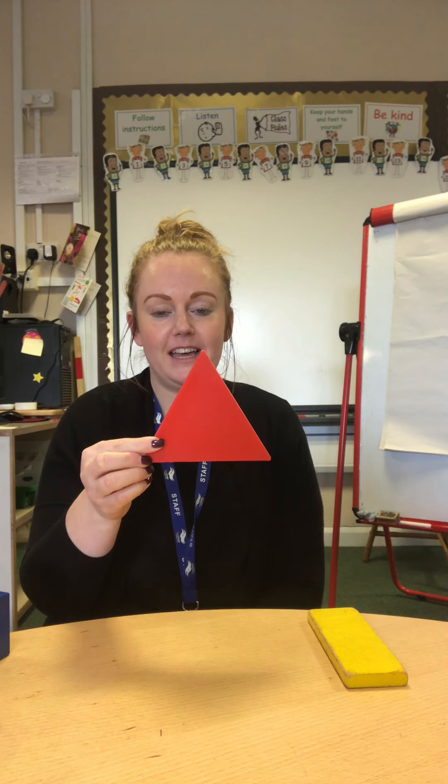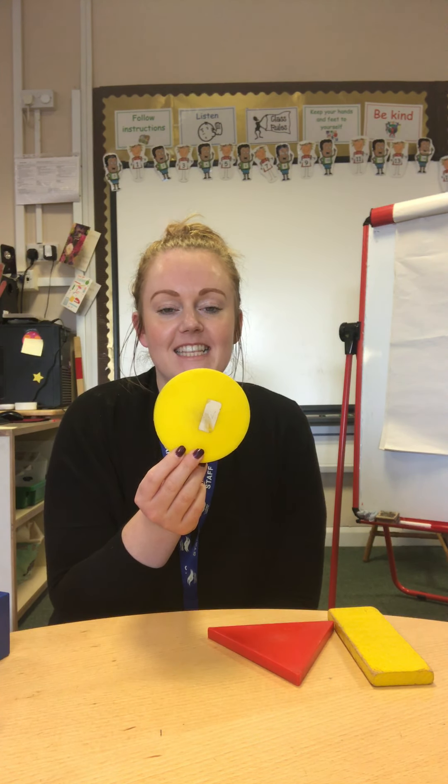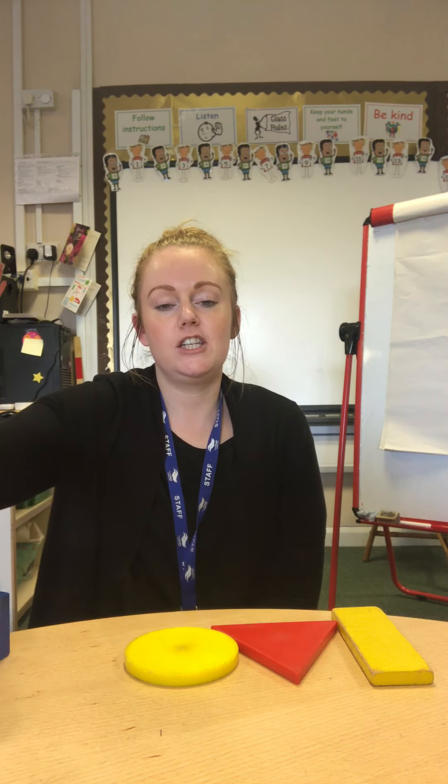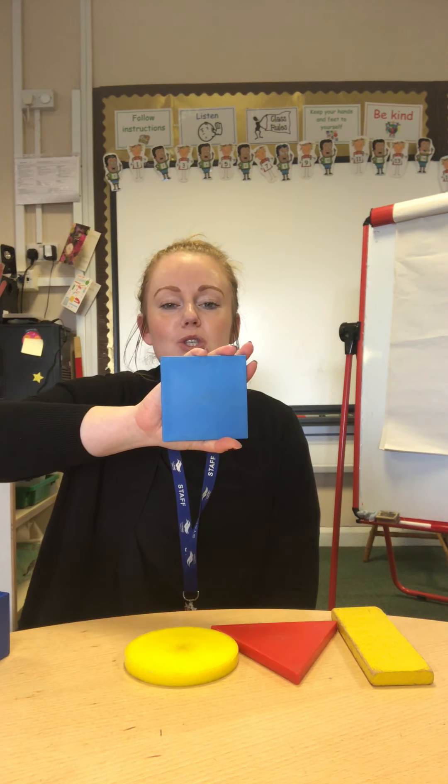Let's see if you know the name of this shape. Well done, it's a rectangle. Let's see if you know the name of this shape. It's a triangle, did you get that one? Well done, triangle. What's the name of this shape? It's a circle. And our other 2D shape that is flat, it's a square. We've got our square shape.